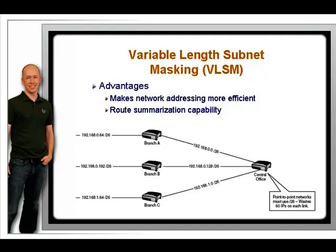Although this is common practice in modern networks, there was a time when this was impossible because the routing protocols in use could not support it. Classful protocols, such as RIP version 1, do not include the subnet mask of advertised networks in their routing updates. Therefore, they cannot possibly learn the existence of more than one mask length.